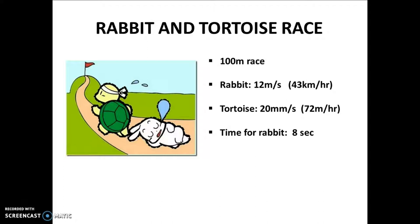The time taken by the rabbit to cover this 100 metres track is only about 8 seconds. How do we get it? The formula for speed is: speed is equal to distance upon time. So, time is equal to distance upon speed, which is equal to 100 metres divided by 12, which comes out to be about 8 seconds.